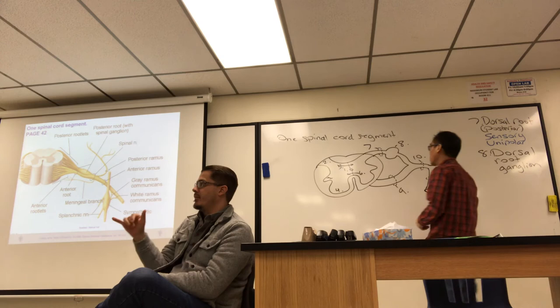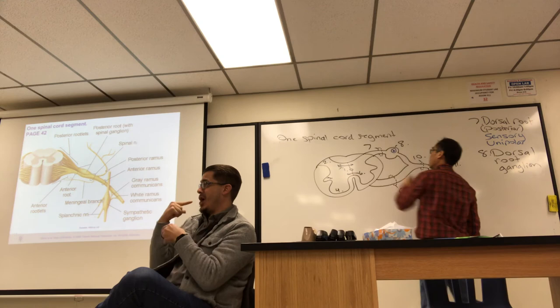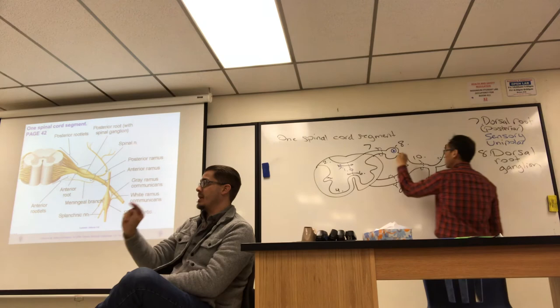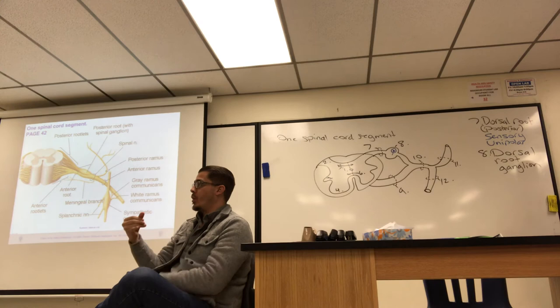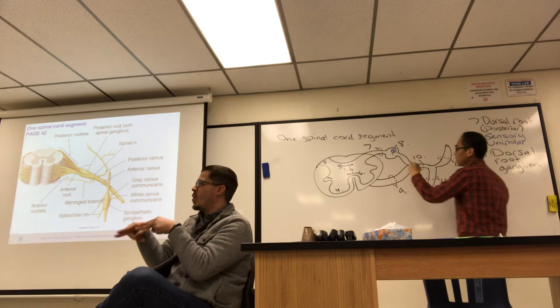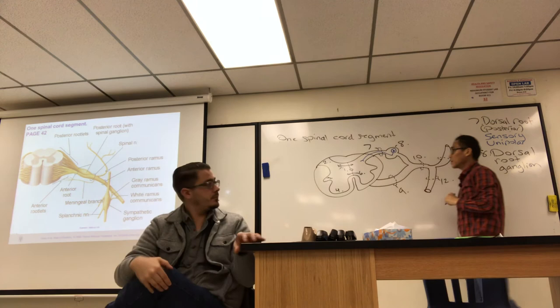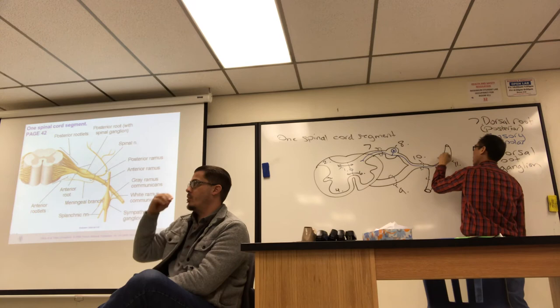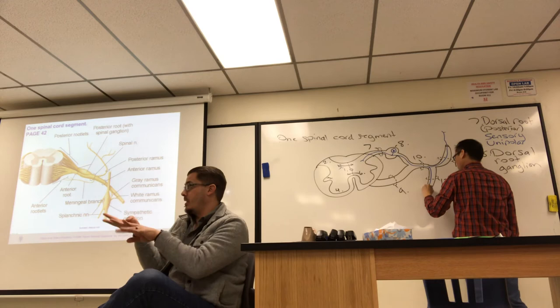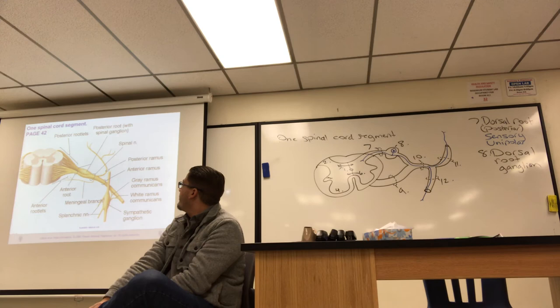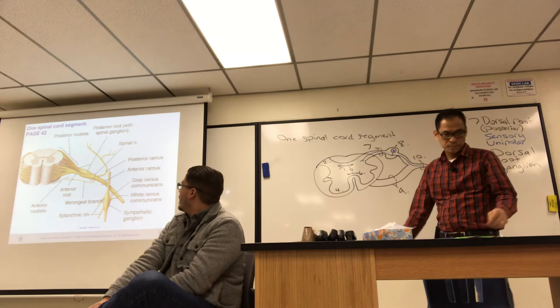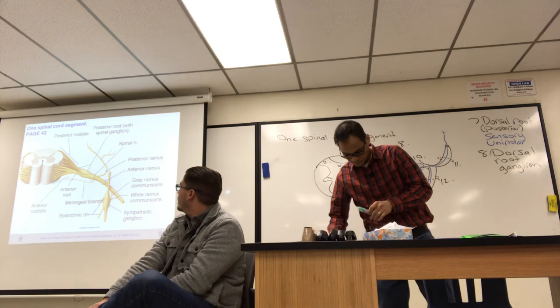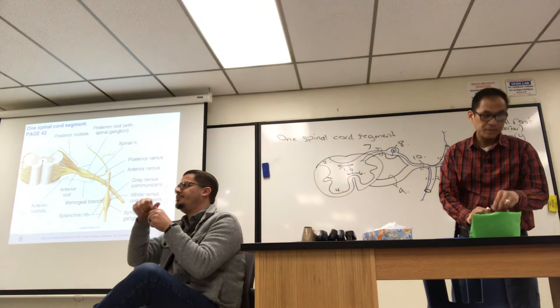Dorsal and posterior are interchangeable terms. The dorsal root ganglion contains the cell bodies of unipolar neurons. One extension comes off the cell body and immediately bifurcates: one short branch enters the dorsal horn, and the other branch comes from the periphery, bringing sensory information. Sensations can be somatic sensory or visceral sensory.